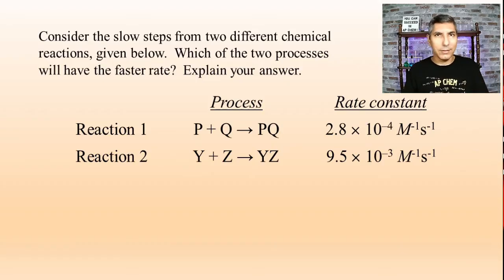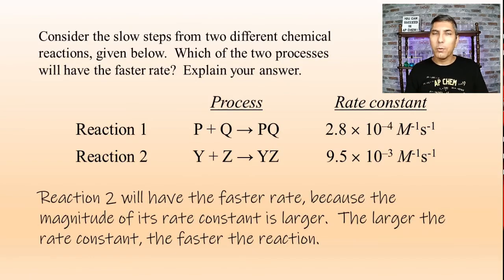The fact is, whichever reaction has the higher value of the rate constant, that's going to be the one that's faster. So we can see here that reaction two has a rate constant of 9.5 × 10⁻³ M⁻¹s⁻¹. And so since that's the larger of the two rate constants, that's the one that's going to be faster. Whichever reaction has the higher magnitude of its rate constant, that's the one that's going to be faster.